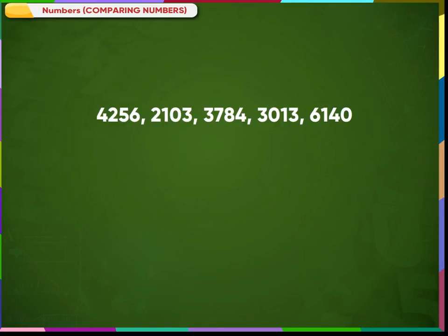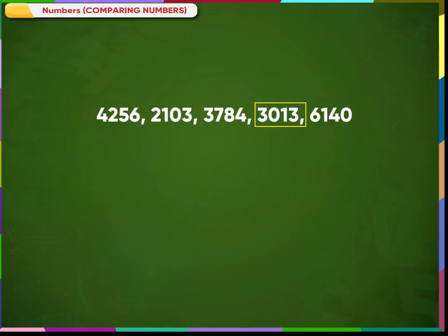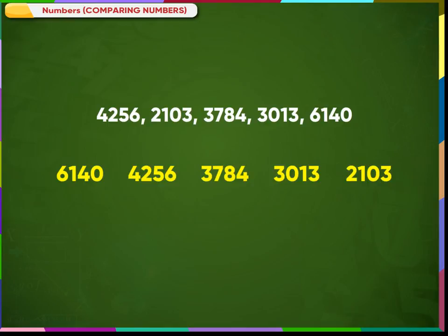Let us arrange these numbers in decreasing order. We know that in the given numbers, 6140 is the largest. The next larger number is 4256, then comes 3784, then 3013, and finally 2103 is the smallest number in the given numbers.